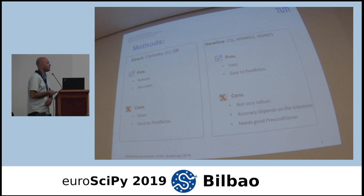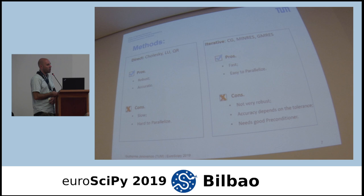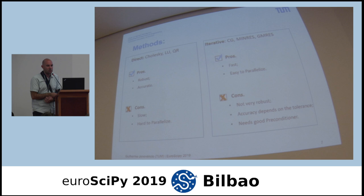Sometimes we try to combine these methods. For instance, you may have heard of incomplete Cholesky together with CG — conjugate gradient. Basically we use the incomplete Cholesky as the preconditioner for the CG method. Combining these methods is often a good idea instead of using them in isolation.